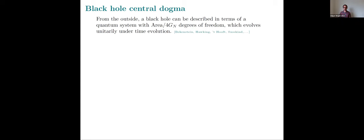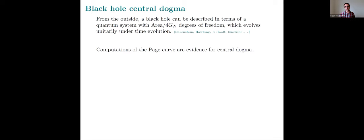The topic is the central dogma and cosmological horizons. Let me review what I mean by the central dogma — in particular, the black hole central dogma. It's the statement that a black hole can be thought of as an ordinary quantum system. If you stand outside and look at it, it evolves like any other quantum system. It has a Hilbert space with area over 4G degrees of freedom, where the area is the area of the event horizon. A few years ago there were calculations of the page curve of Hawking radiation, which can be thought of as evidence for the central dogma. The entropy of the radiation doesn't exceed the area of the black hole, suggesting the black hole has this many degrees of freedom.